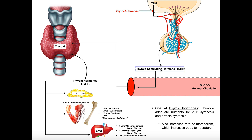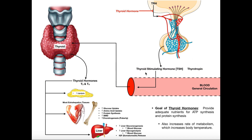Thyroid stimulating hormone is also termed thyrotropin — that's actually where TRH gets its name, thyrotropin-releasing hormone, stimulating the pituitary to release thyrotropin. When TSH is made by the pituitary, it's released into the general circulation, where it circulates throughout the body. Its main target is the thyroid gland, where it stimulates the thyroid to make thyroid hormones — collectively T3 and T4.